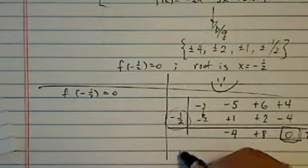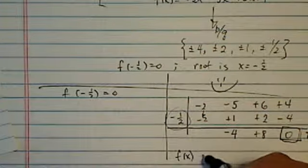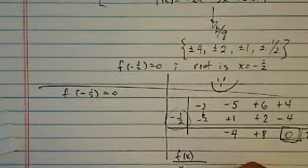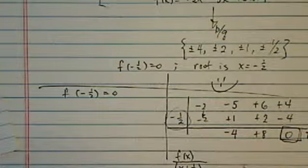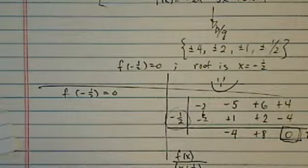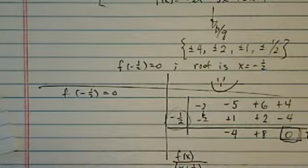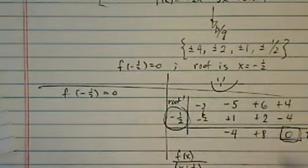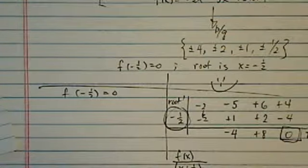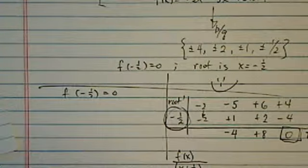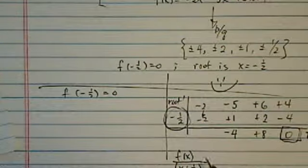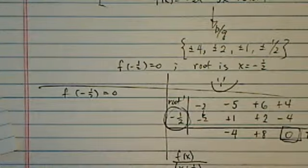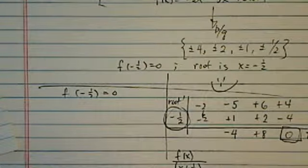What really is happening here is basically fx dividing by x plus half. Now this is the interesting part. The synthetic division has a little quirk in that you must put the root here. In long division, you divide whatever you have.